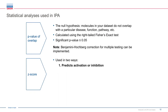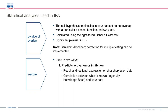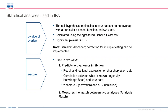A z-score ≥ 2 means we predict something is activated; ≤ −2 means we predict it's inhibited. We also calculate a separate z-score for the Analysis Match feature, which seeks to identify other analyses that are very similar or dissimilar to your own. Here, a z-score ≥ 2 means two analyses are predicted to be good matches, while ≤ −2 yields a prediction of an anti-match — meaning the two analyses show very different biological signatures.